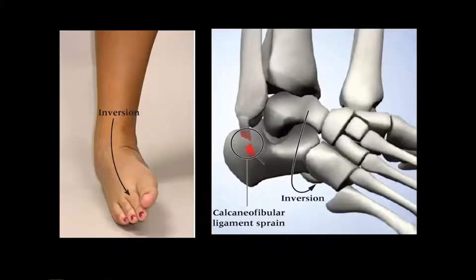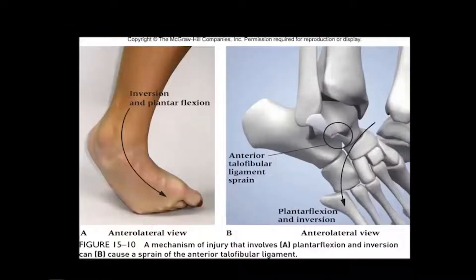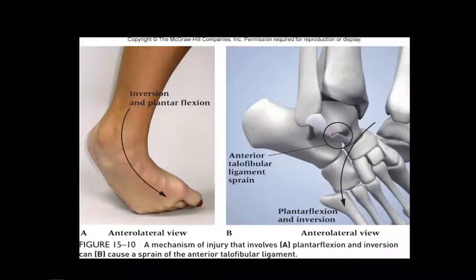These images show the typical inversion movement and a third degree calcaneofibular ligament sprain. As mentioned earlier, the anterior talofibular ligament is the most commonly injured ligament, and its cause is a combination of the inversion and plantar flexion positions.